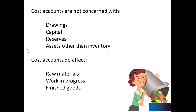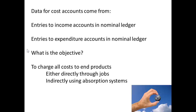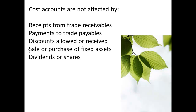Cost accounts are not concerned with drawings, capital, reserves, or with assets other than inventory, but they do affect raw materials, work in progress, and finished goods. We get the data for cost accounts from the income accounts and the expenditure accounts, and the objective is to charge the costs to the end products, either directly through jobs or indirectly using absorption systems. Cost accounts are not affected by receipts from trade receivables, payments to trade payables, discounts, sales or purchases of fixed assets, dividends, or shares — they are concerned mainly with income and expenditure.